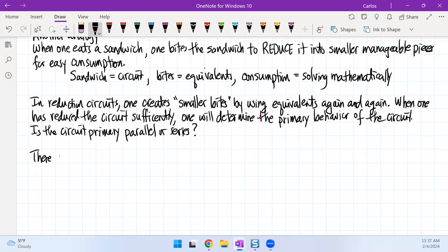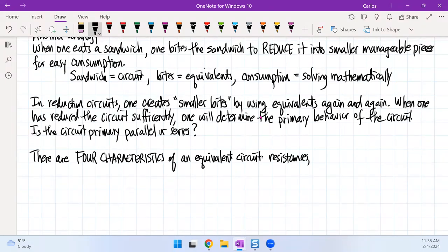So there are four characteristics of an equivalent circuit. It has to deal with resistance. How do resistors in series and parallel behave? And then we're going to ask, what about the currents? How do the currents behave in series and in parallel? How do the voltages behave in series and parallel?